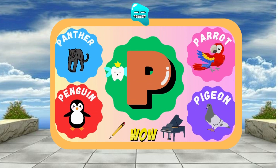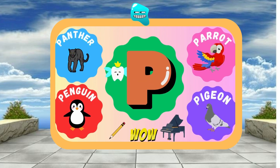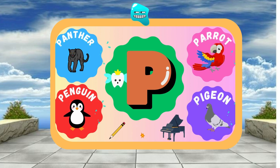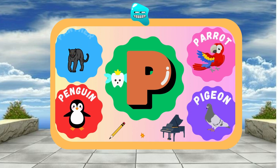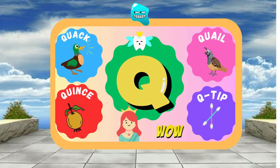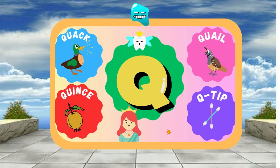P is for Pencil — P, p, Pencil. P is for Piano — P, p, Piano. Q is for Queen — Q, q, Queen. Q is for Quail — Q, q, Quail.